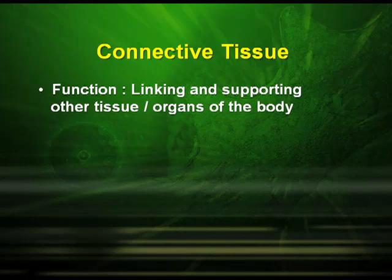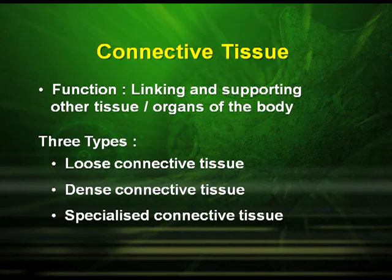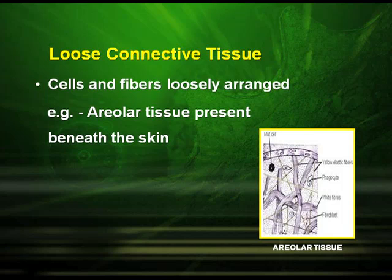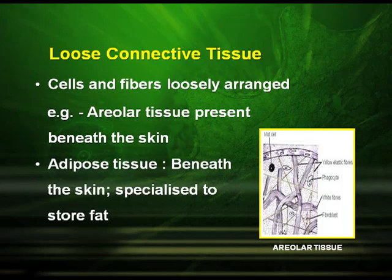The next type of tissue under the animal tissue category is the connective tissue. Their function is linking and supporting the other tissues and organs of the body. There are three types of connective tissues: loose connective tissues, dense connective tissues, and specialized connective tissues. In loose connective tissues, the cells and fibers are loosely arranged. For example, areolar tissue found beneath the skin, and adipose tissue, also found beneath the skin, which stores fat.